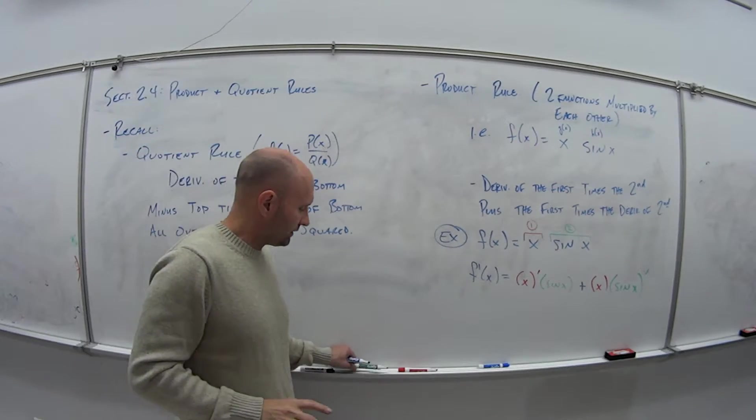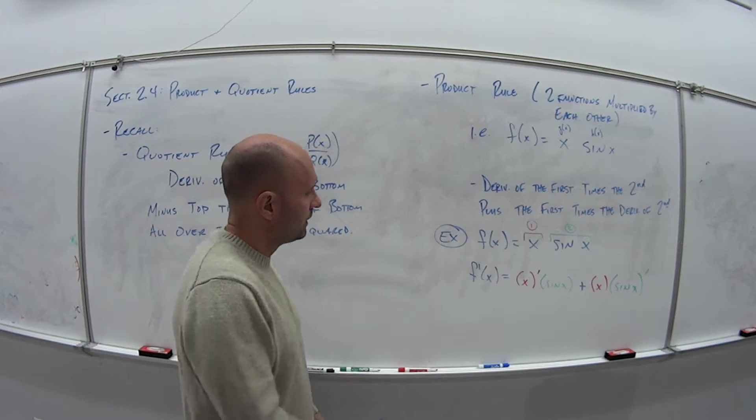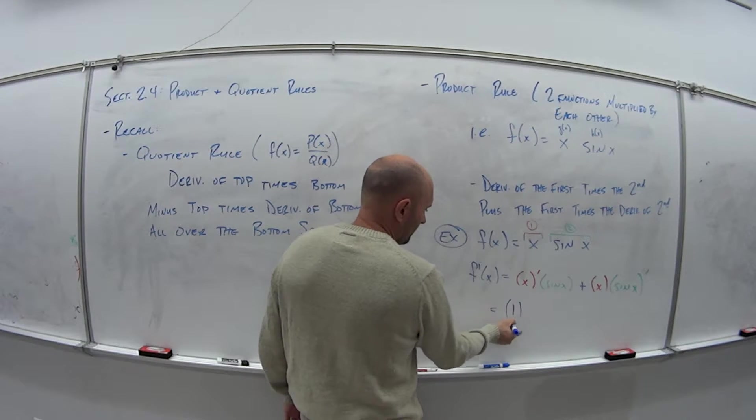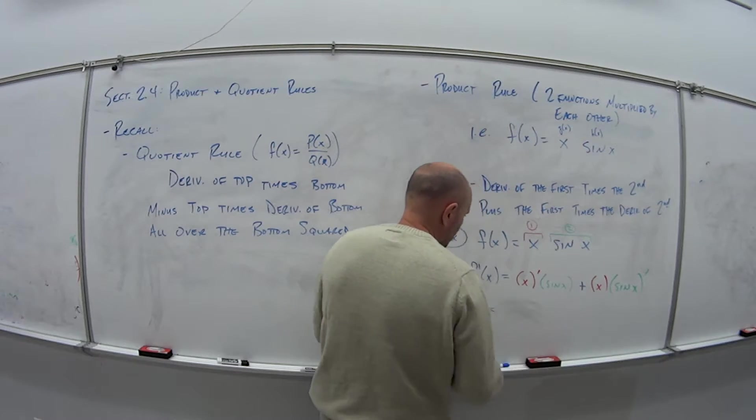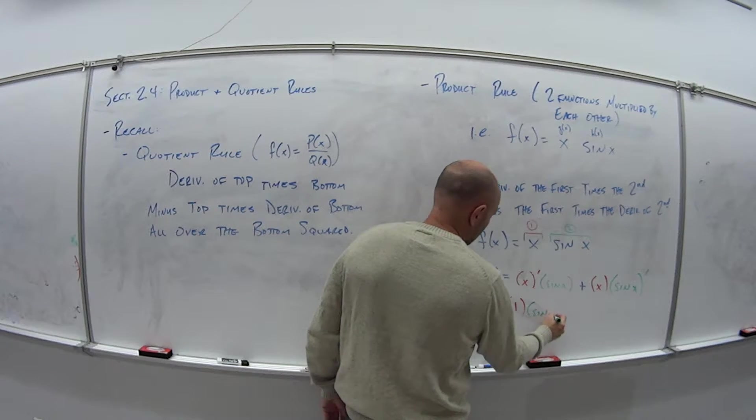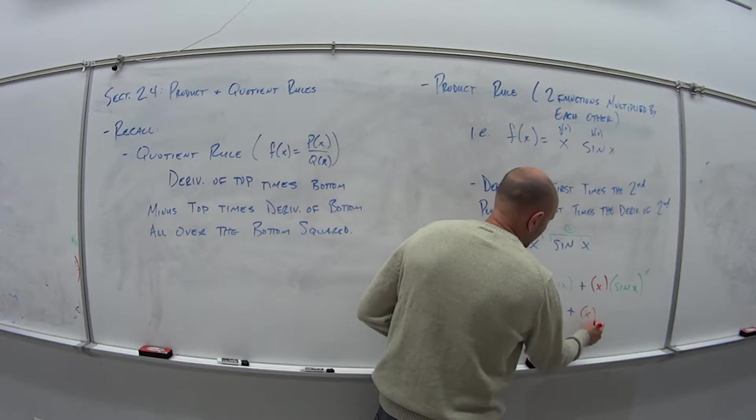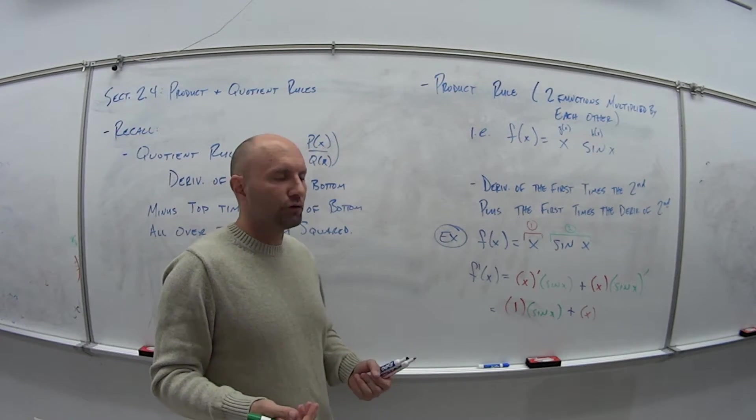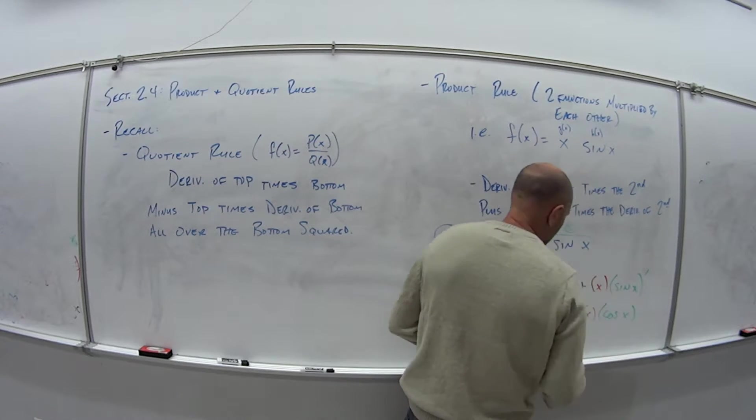And again, you don't have to do this every time. I'm just trying to show you what piece is what and how it corresponds to what we're doing. So that means what? Well, the derivative of x is just what? It's just one. Actually, let me go back to the colors here so you can keep track. So derivative of x is equal to 1 times sin(x) and then plus x times the derivative of sin(x). So remember back to the video for 2.3, derivative of sin(x) is just equal to cos(x).